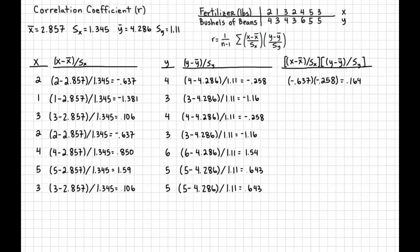Let's continue on. We take negative 0.637 times negative 0.258. We multiply that. Two negatives make a positive. We multiply the numbers. We get 0.164. Next set is going to be negative 1.381 times negative 1.16. Two negatives again make a positive. Multiply the numbers out, 1.60. Next set is going to be 0.106 times negative 2.58. Multiply that. Positive times a negative gives you a negative. Do the math, 0.027. Next set is going to be negative 0.637 times negative 1.16. Two negatives make a positive and that gives you 0.739.